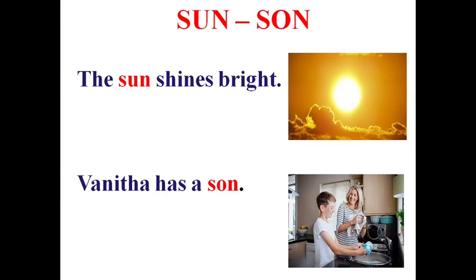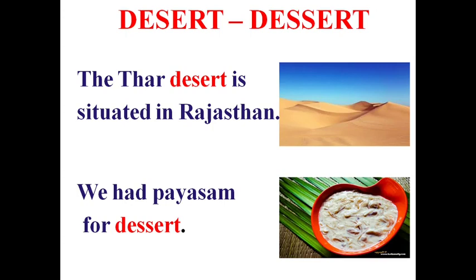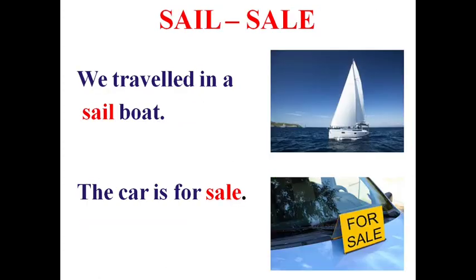Sun and son: 'The sun shines bright' — a star; 'Vanita has a son.' Road and rode: 'The road is full of traffic'; 'Rode on horseback' — past tense of ride. Desert and dessert: 'The Thar Desert is situated in Rajasthan' — a dry place with no vegetation; 'We had payasam for dessert' — a dish served at the end of a meal. Sail and sale: 'We travelled in a sail boat'; 'The car is for sale.'